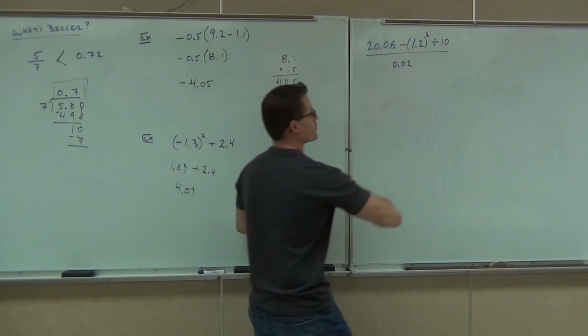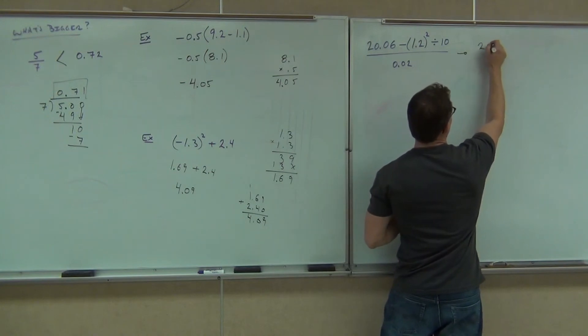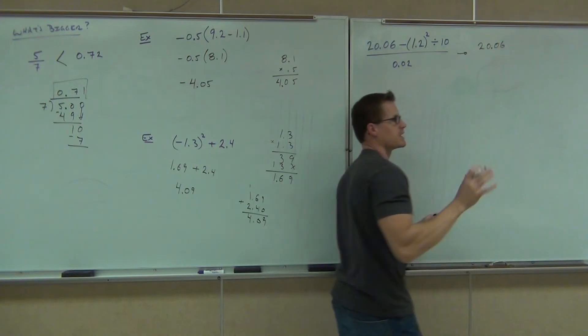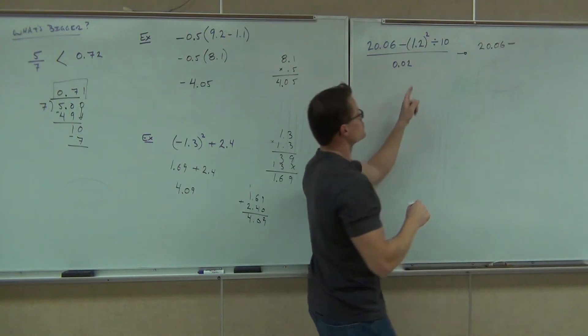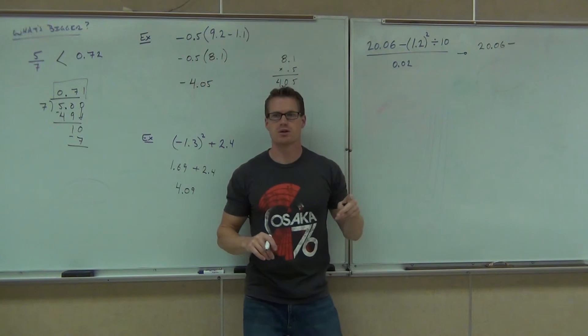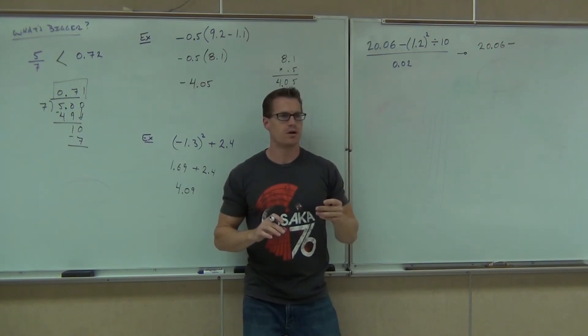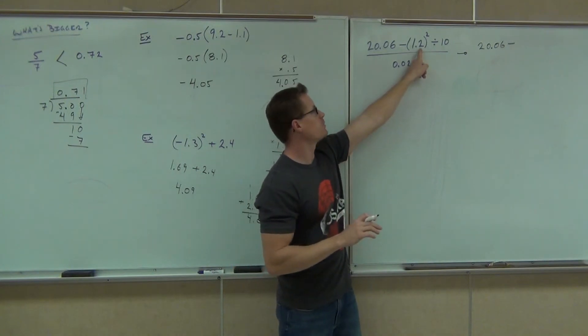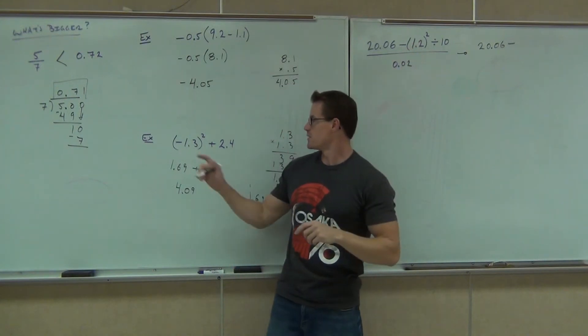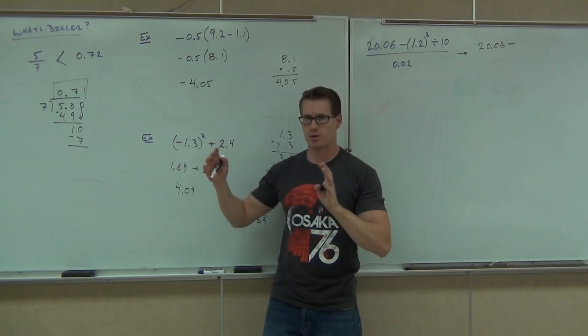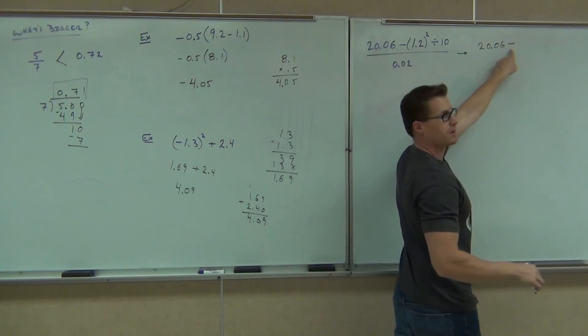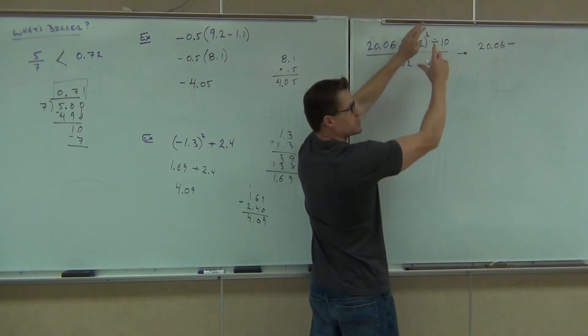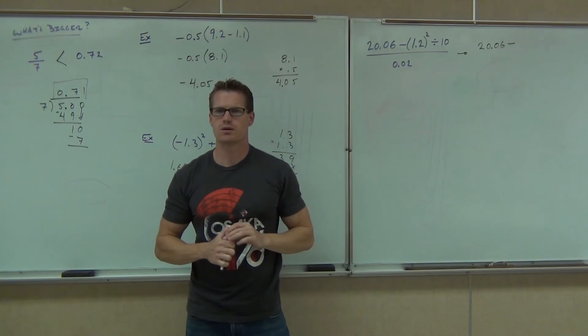So what we're going to do is we're going to rewrite this as 20.06. I'm not going to touch that yet. Not yet. We're not doing anything with that yet. Minus, I'm going to do this problem 1.2 squared off to the side. Now, look at the board with me, please. Look at the board. Do you notice? I should be on the board right now. Do you notice how this problem is different than this problem? This one, the negative was inside. It got squared. It went away. Wait, is this minus sign inside? No. So I'm going to have a minus sign. This is just 1.2 squared. Just do that little piece. How much is 1.2 squared? 1.44. Very good.